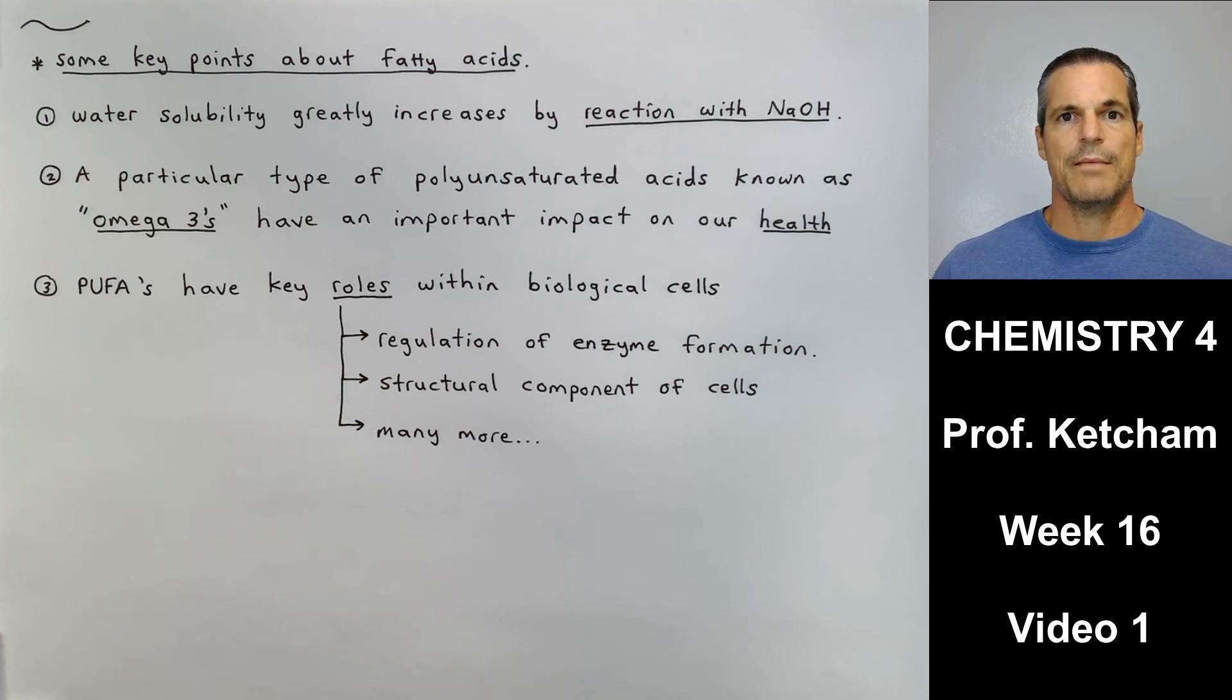Omega-3 is a strange phrase. What does that mean? Well, this is actually weird because if you number from the CH3 end, which is the end all the way on the other side from the carboxylic acid end, if you count one, two, three, omega is the third, the third carbon right there. So if you have a double bond off of that omega-3 carbon, then it's considered an omega-3 fatty acid. And then number three, polyunsaturated fatty acids, PUFAs, have key roles within biological cells. Polyunsaturated fatty acids are involved in the regulation of enzymes and enzyme formation. They're a structural component of cells. And then there's many more also listed in chapter 15 of your textbook. So that's it for video one, fatty acids. Next video is coming up right after this, which will round off and complete our chapter on lipids or fats.